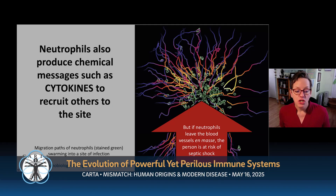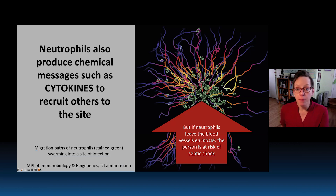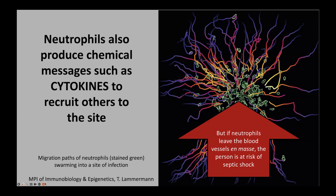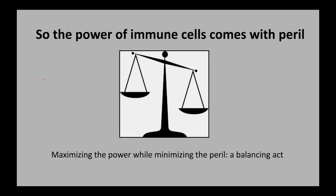So this swarming of neutrophils is very important in defending our bodies against infection, but it poses a very acute risk of dangerous reactions such as septic shock. An evolutionary ecologist like me thinks of this as a cost-benefit trade-off between the power and the peril of immune cells such as neutrophils. We would consider that natural selection may have helped to maximize the power of cells to use phagocytosis to clear microbes while minimizing the peril — minimizing the risk that a septic shock reaction will occur.